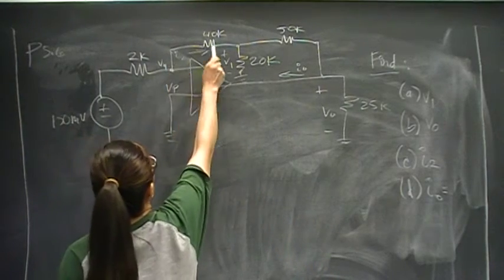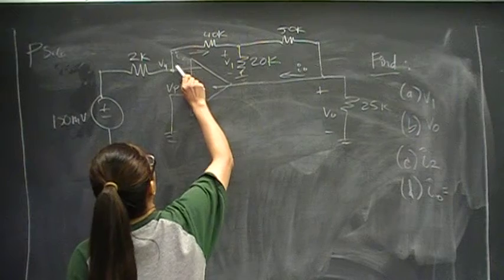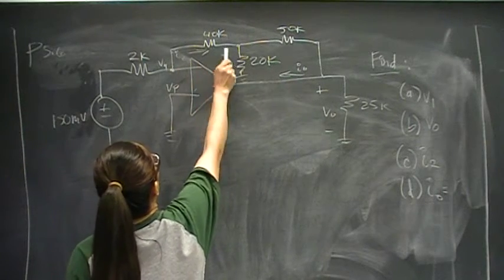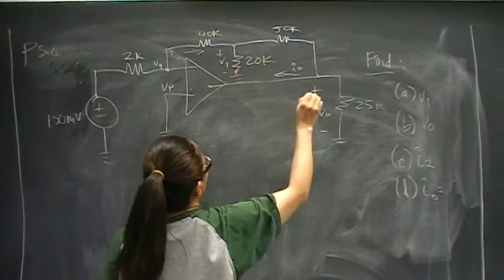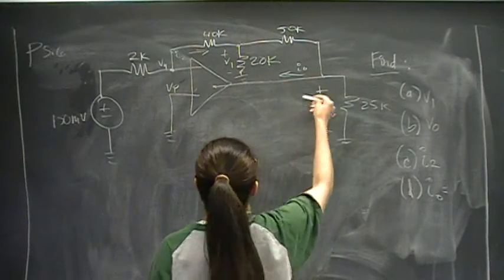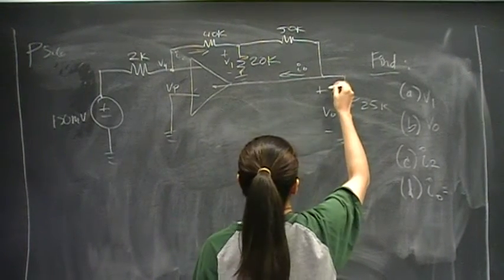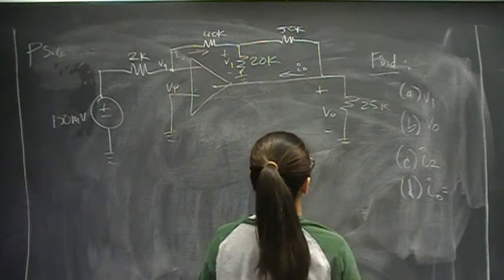And we want to find I2, which is the current across the 40 kilo-ohm resistor, the voltage drop across the 20k current that's going back into the op-amp and Vout.